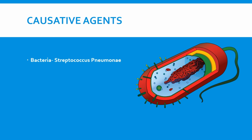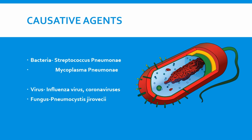What are the causative agents that cause pneumonia? The causative agent can be bacteria — the most common bacteria include Streptococcus pneumoniae or Mycoplasma pneumoniae. It can be a virus such as influenza virus or coronavirus, and there are certain other viruses that cause pneumonia. If it is fungus, it can cause pneumonia as well. Pneumonia can also be caused by chemical exposures and by food aspiration, which occurs when food particles enter the trachea, reaching the alveoli and causing inflammation.